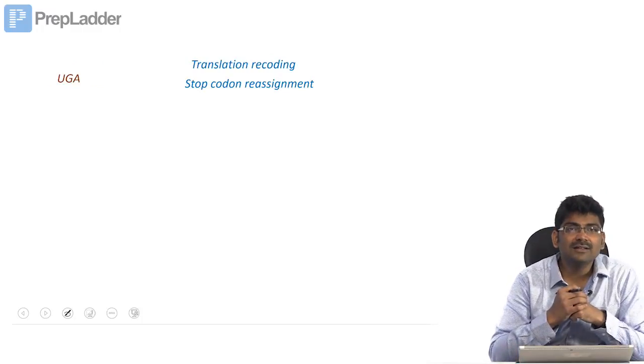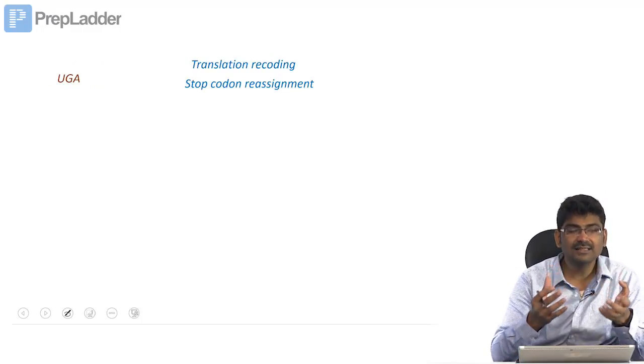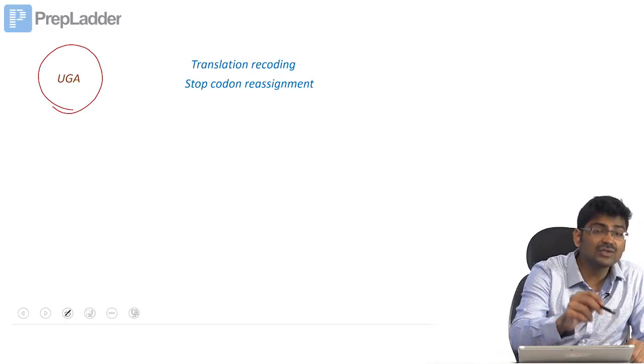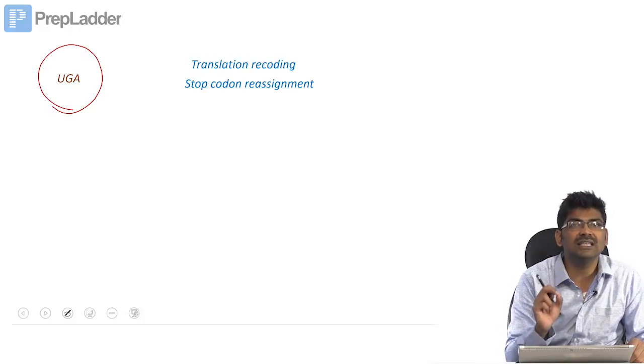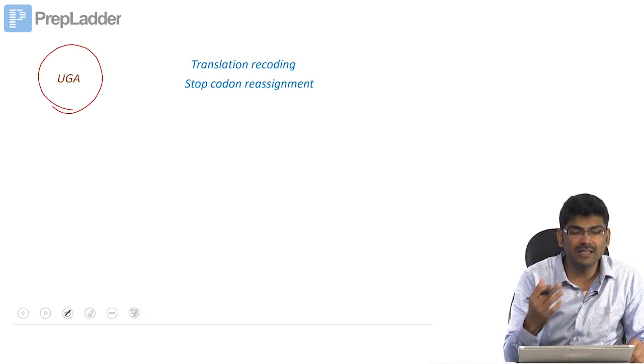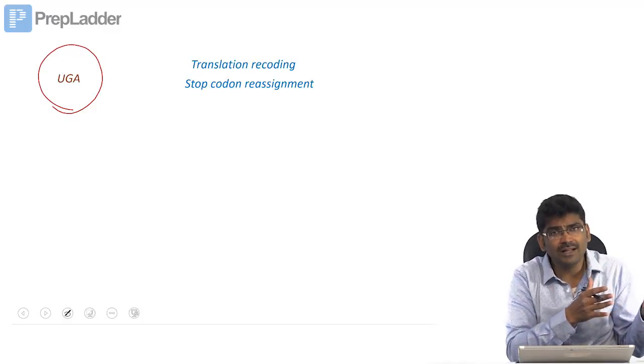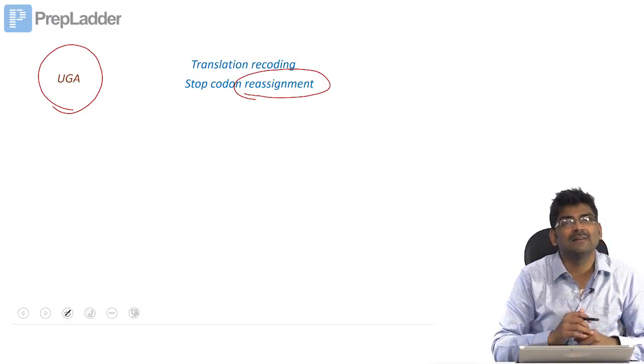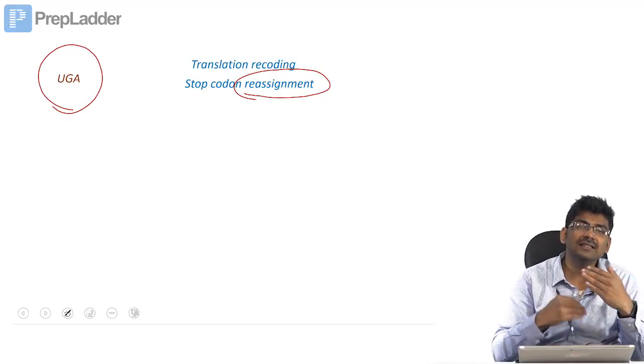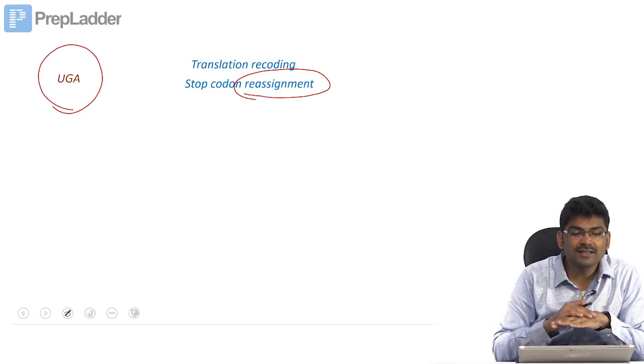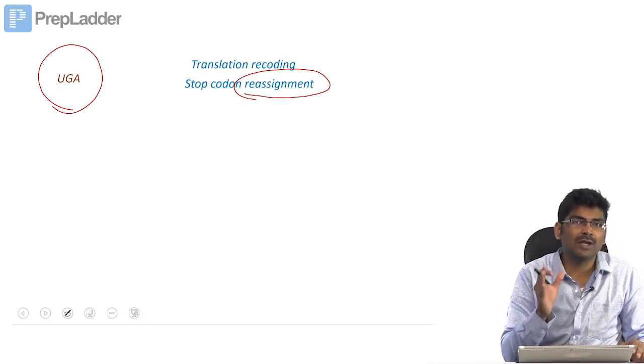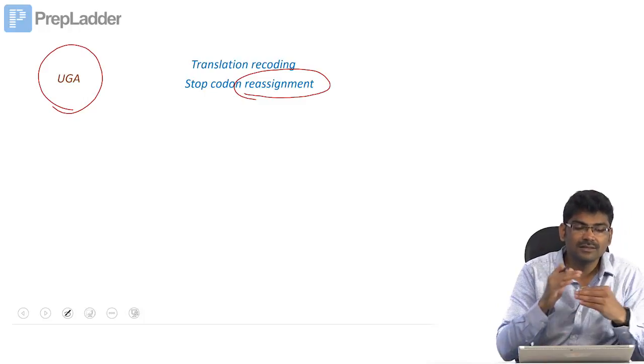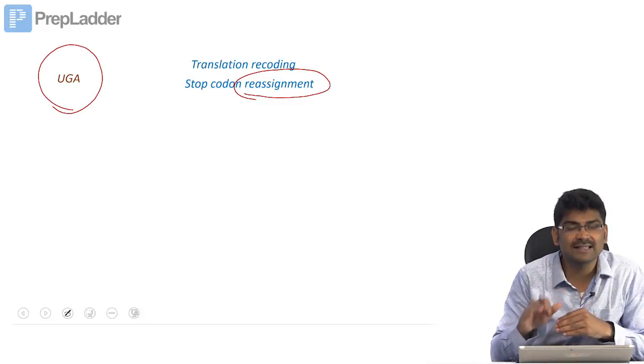I told you that selenocysteine has its own specific transfer RNA and it utilizes a stop codon. UGA codes for selenocysteine. UGA usually codes for stop codon, right? So that is why we call this reassignment. Selenocysteine is synthesized by translational recoding. Ordinary coding is recoded. This is now also known as stop codon reassignment.